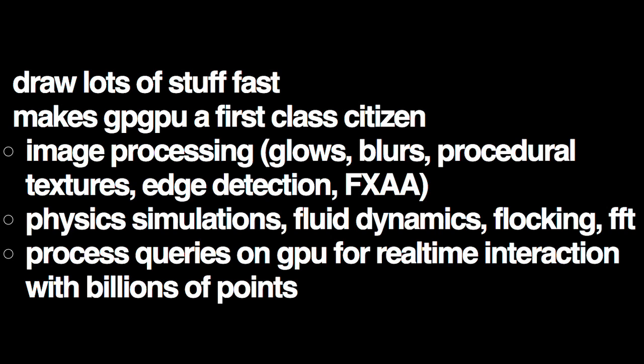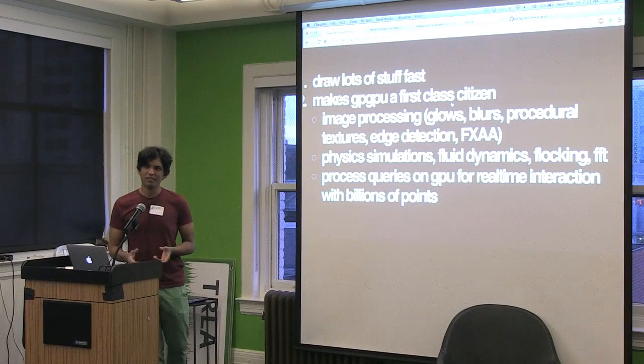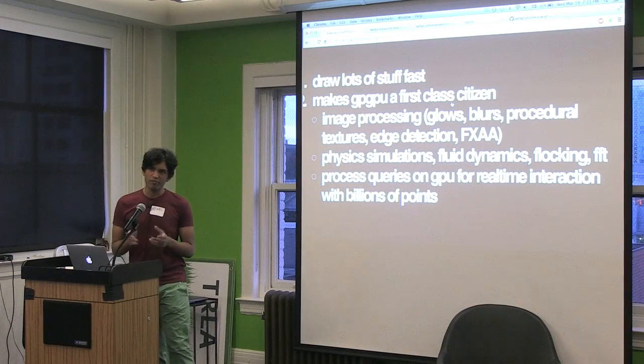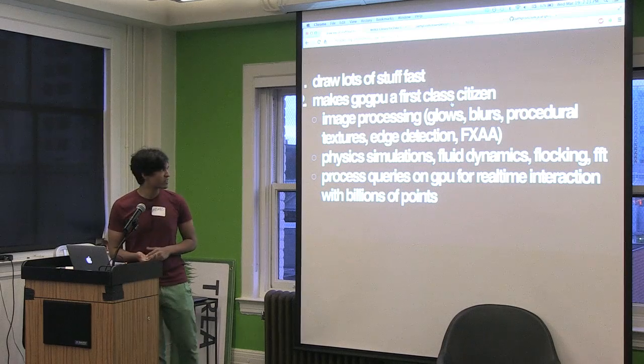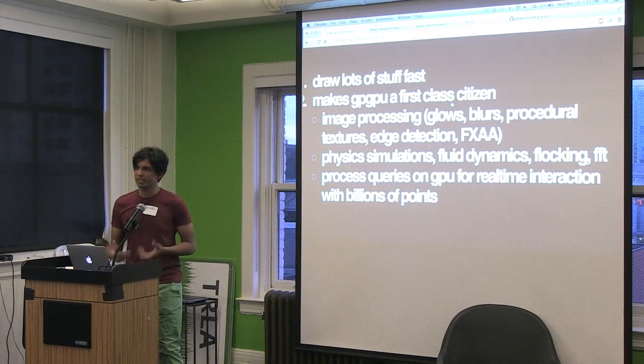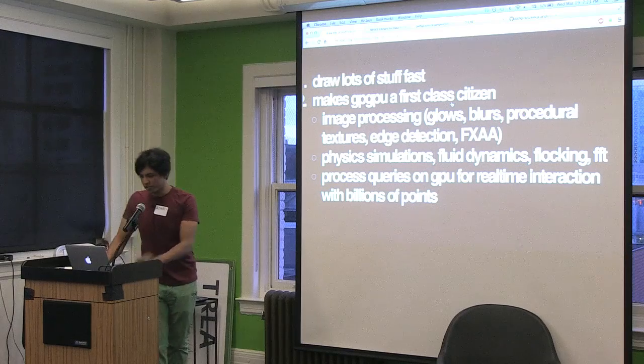There are two big reasons we want to do that. The biggest one is you want to draw lots of stuff really fast. But the bigger one, in my opinion, is using the GPU as a first-class citizen — basically offloading big computations to your graphics card, for stuff you really don't want to do on your CPU.